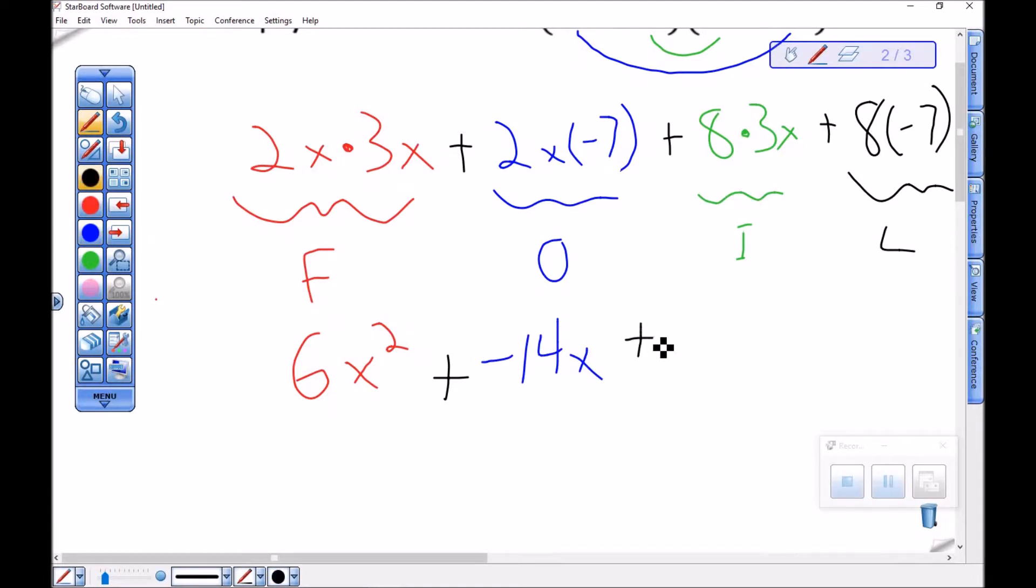Plus 2x times minus 7 is negative 14x. Plus 8 times 3x is 24x. And 8 times negative 7 is negative 56.